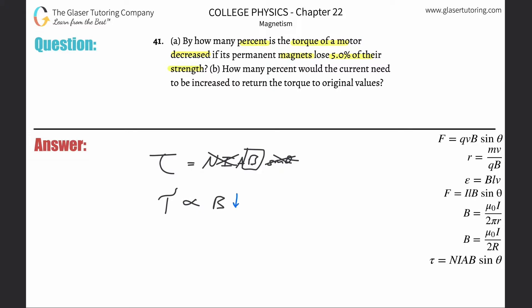So if the magnetic field strength goes down by whatever, if it goes down by half, then the torque goes down by half. If the magnetic field goes up by 2%, then the torque will go up by 2%. So if the magnet loses 5%, then what happens to the torque? It loses 5%. It's as simple as that.